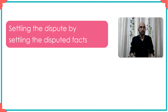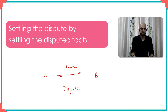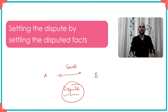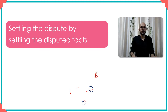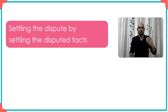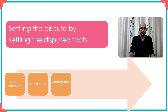One more little reminder: we settle the dispute by settling the disputed facts. Let us say two people, A and B, who are in dispute come to the court. The dispute arises because there are several disputed facts, so if each one of these disputed facts is settled then the dispute also gets settled. To remind you of the court process in terms of how the dispute is settled: you start off with the fact, you check its relevancy, check its admissibility.